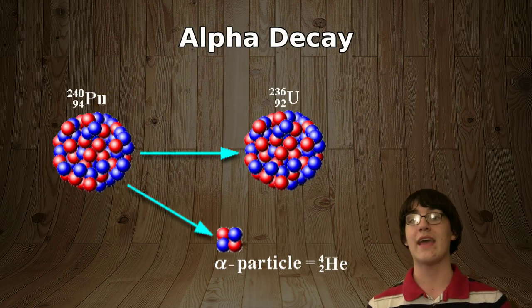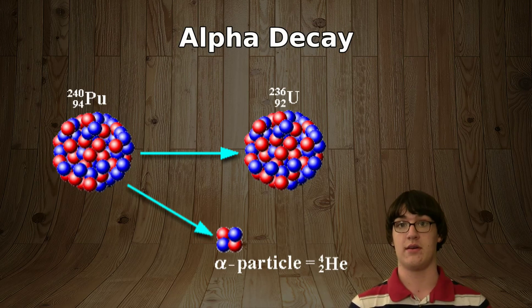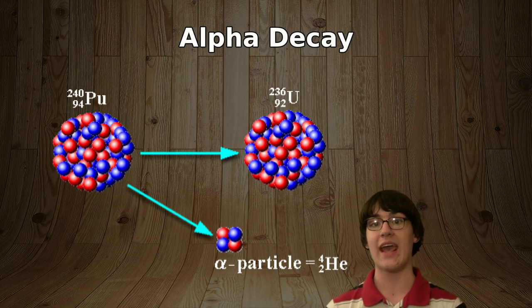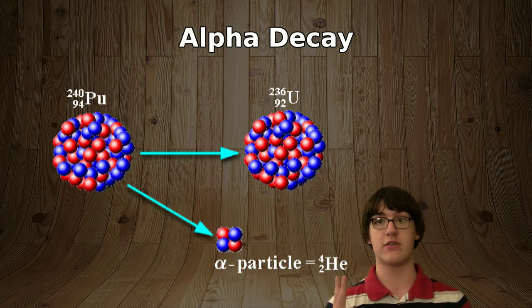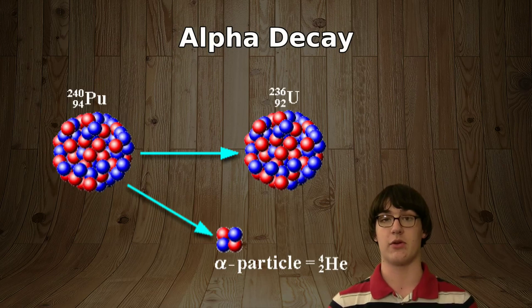Alpha decay is when a nucleus shoots off a helium nucleus. Please note that this is not a full helium atom, it's just the nucleus. The original decaying nucleus loses two protons and two neutrons, the components of a helium nucleus.